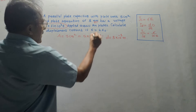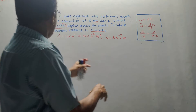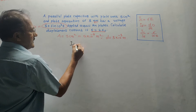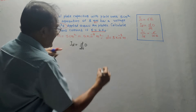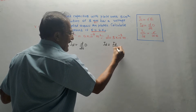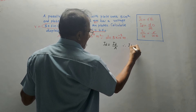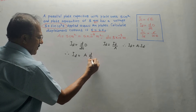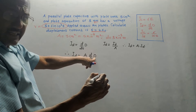We only have three formulas available, and none directly gives the displacement current — only the density JD. The relationship is: JD equals current divided by area, so ID equals A times JD equals A times d/dt of D. I don't have the value of D directly, but I can express D as epsilon times E, where epsilon equals 2 epsilon_0. However, I also don't know E, so I need to use E equals V upon d.